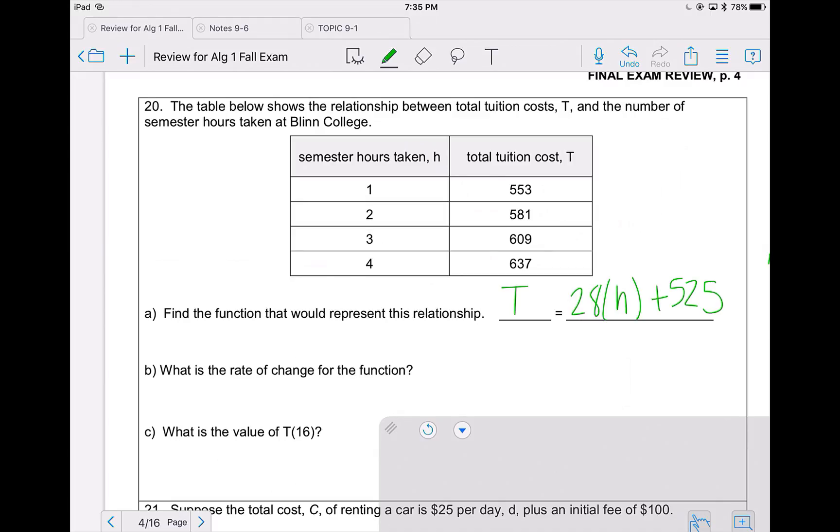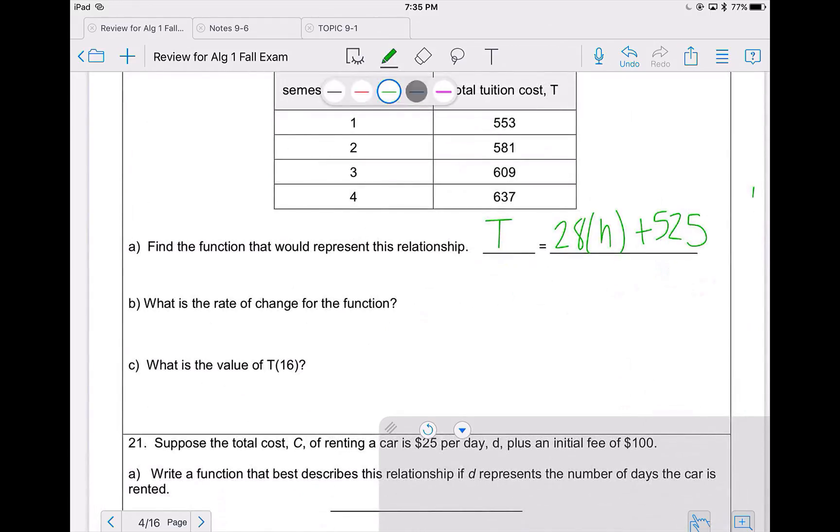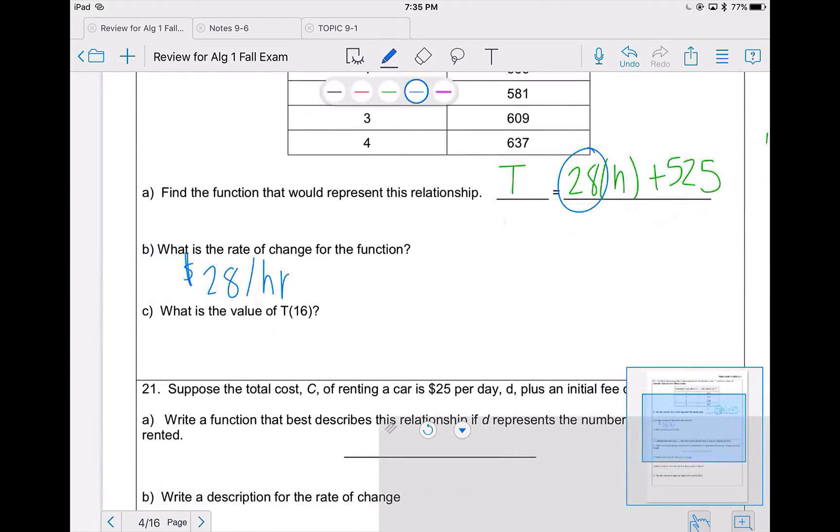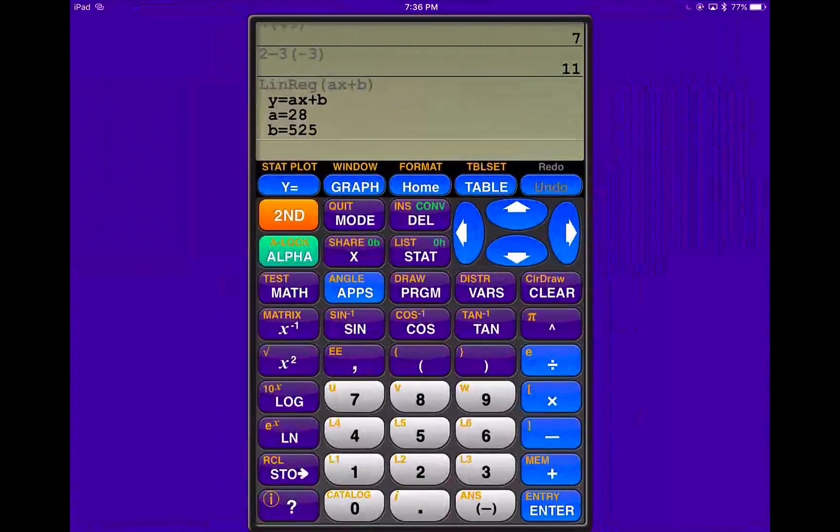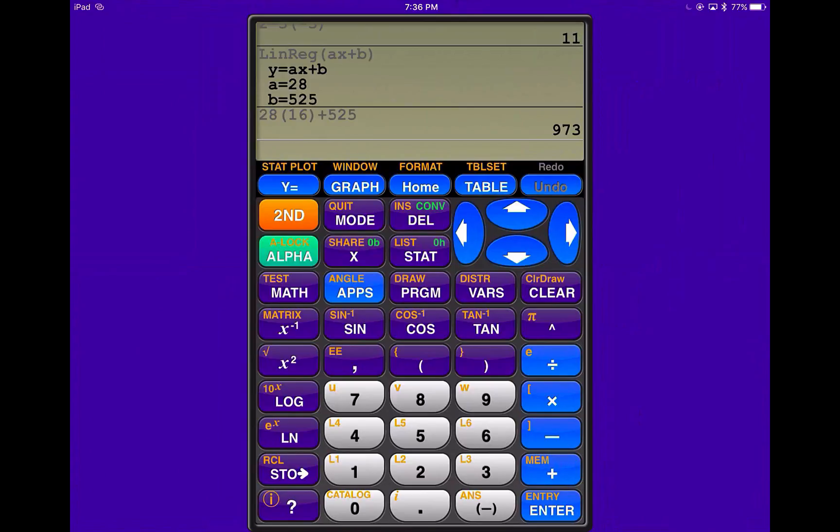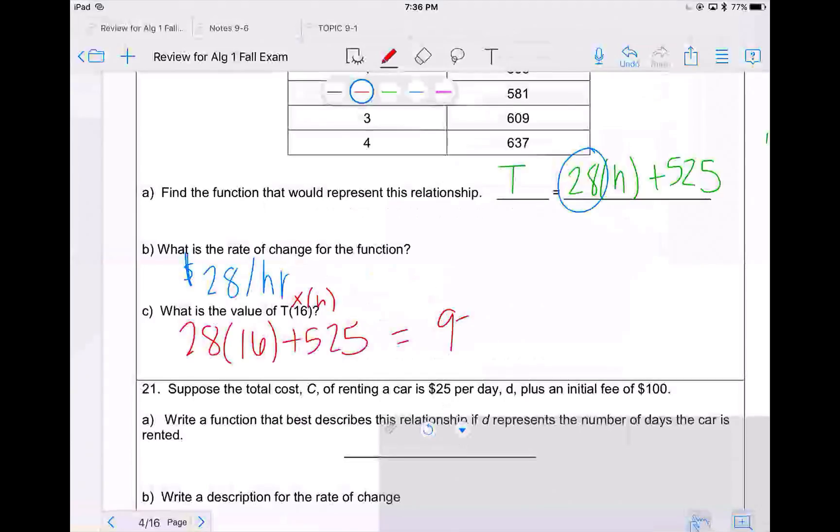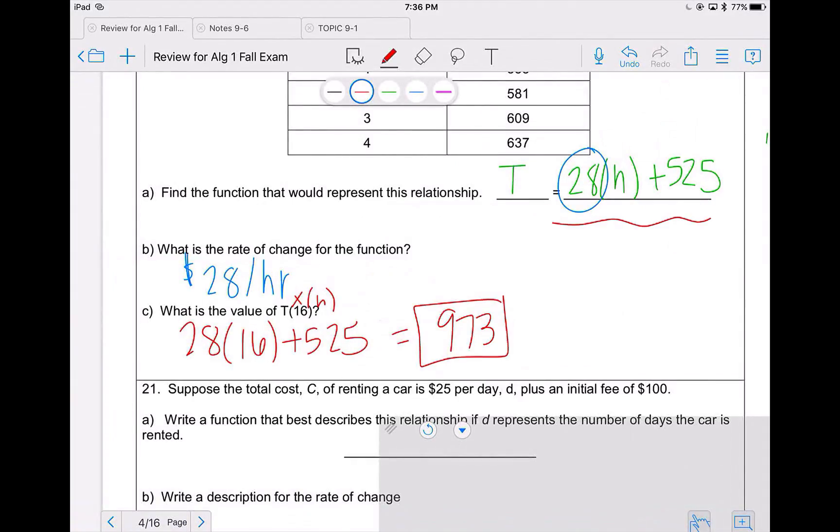Rate of change is the same thing as slope. So 28 cost per hour. So 28y per x or T per H. And the value for T is 16. Remember, they're giving you an x value or in this case an H value. So 28 times 16 plus 525. I can plug that into my calculator exactly like I see it. 28 times 16 plus 525, and that equals 973. You can also do what we talked about on the other problems. Put this into y equals and look at your table when x is 16.